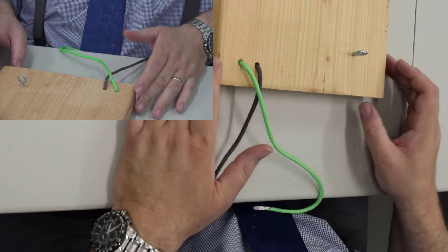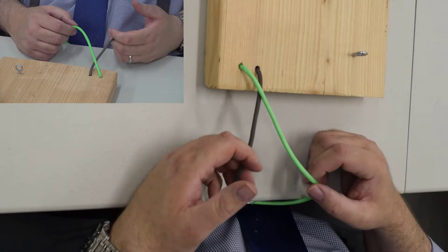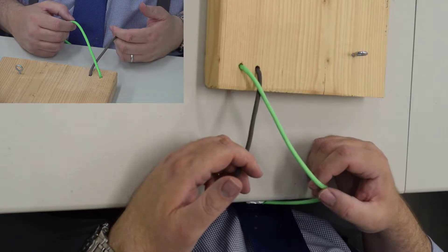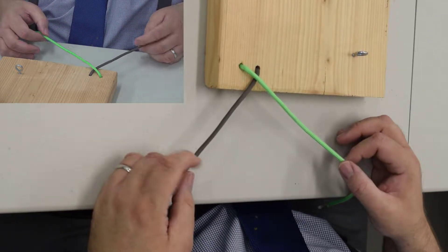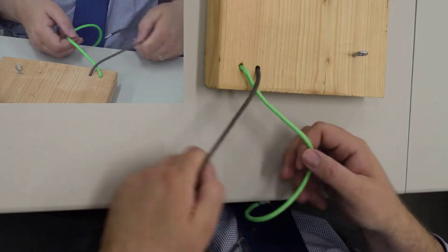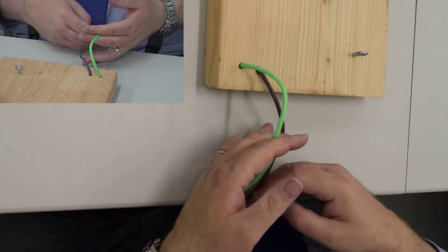So now I want to show you the two-handed tie. I mentioned in the previous segment that it matters whether you have the green over the brown. Let me show you why that is.